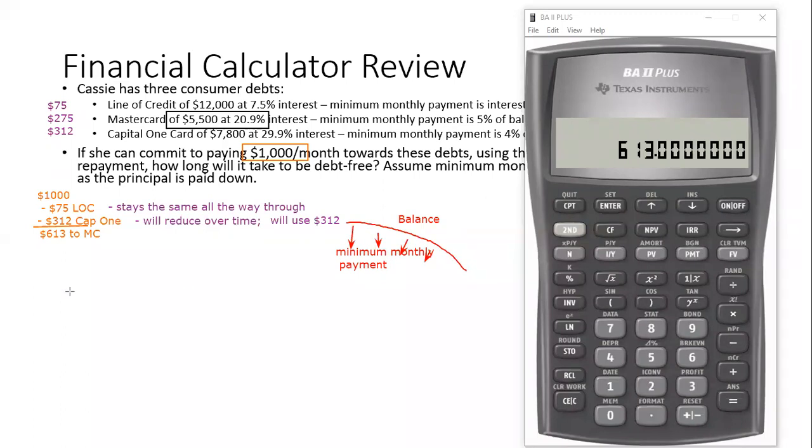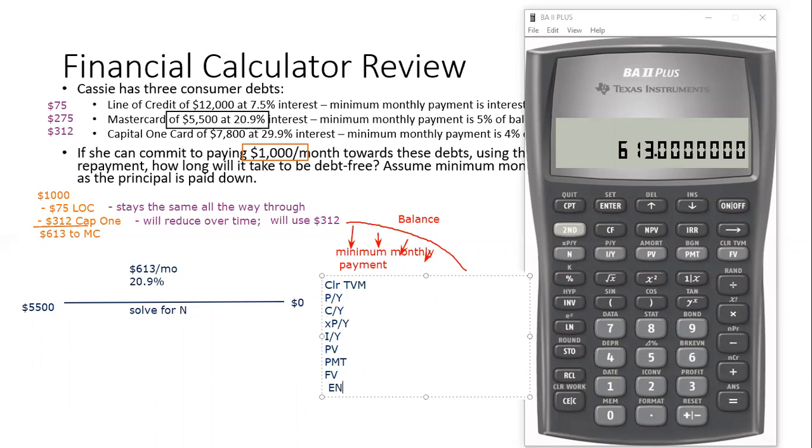Here's what we're going to see. We start off by paying off the smaller balance, the MasterCard. For those that have done the financial calculator with me, we're going to draw a line. Here's what I know. I know we're paying $613 a month. I know the interest rate is 20.9%. I know we're trying to solve to get our future value to zero. I know the current balance is $5,500. We're going to try to solve for N. We can clear our calculator, set our PY and CY.